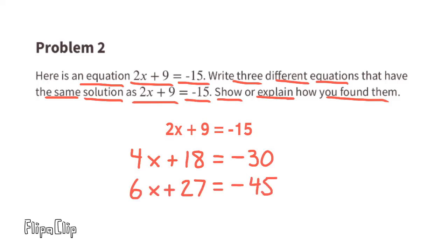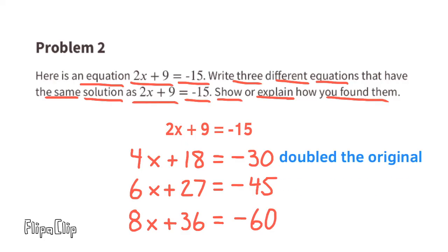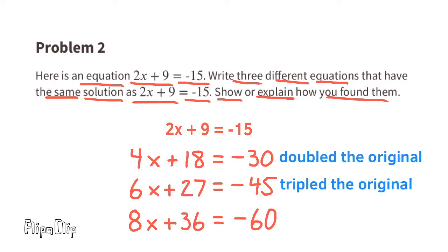I can also triple the original three terms: 2x times 3 is 6x, 9 times 3 is 27, and negative 15 times 3 is negative 45. And I could quadruple the original three terms: 2x times 4 is 8x, 9 times 4 is 36, and negative 15 times 4 is negative 60. I doubled, tripled, and quadrupled the original terms. For all four of these equations, the value of x is negative 12.